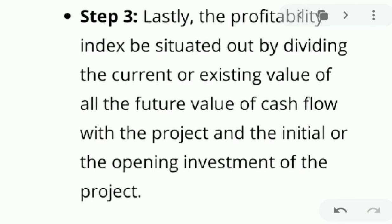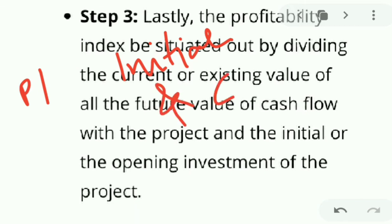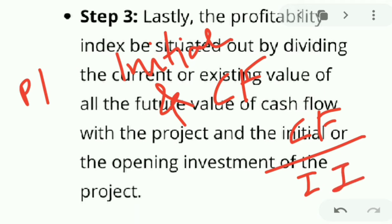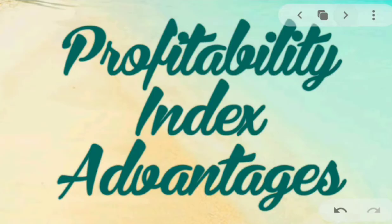Next, we calculate the profitability index by dividing the cash flows by the initial investments. We have the initial investments as well as the cash flows, so PI equals cash flows divided by initial investments. This third step defines dividing the cash flows by the initial investments.